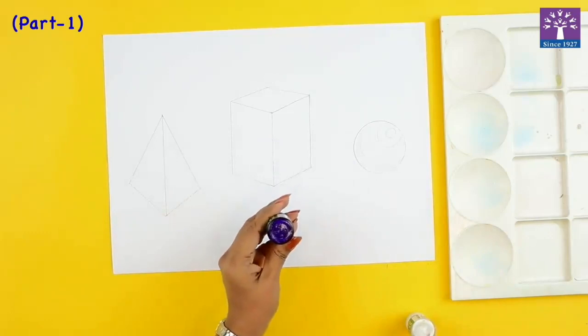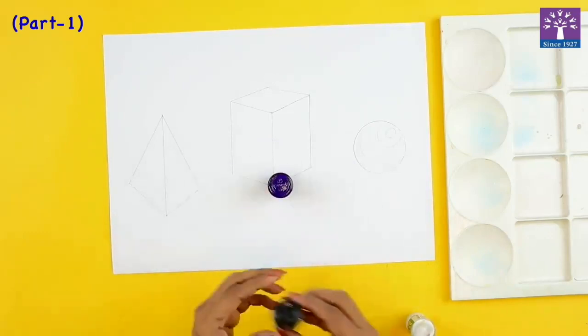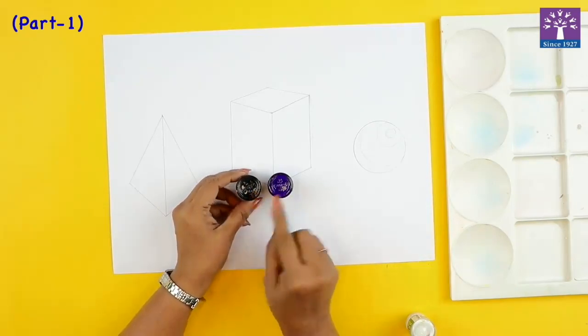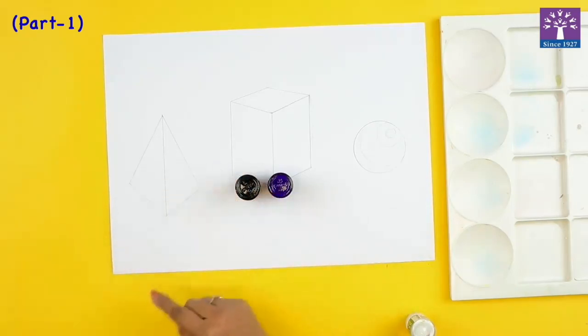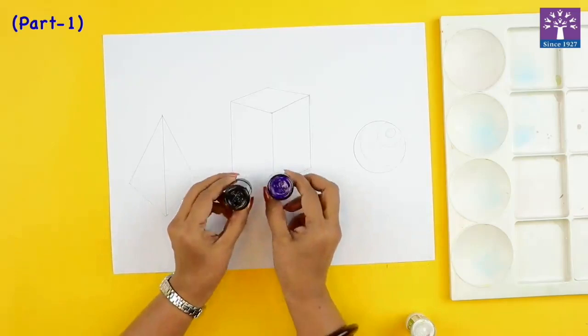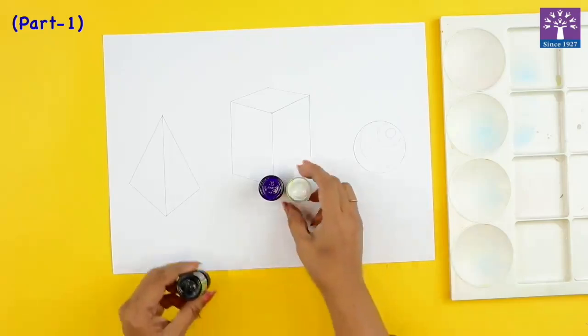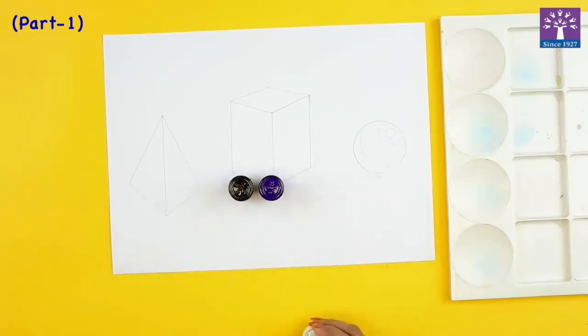Whereas if I want to add shade then what I'll do is I'll keep on adding little bit black and the colors that I get will be the shades of this purple color. So when I want the tint of a color I keep on adding white and when I want a shade I add black.